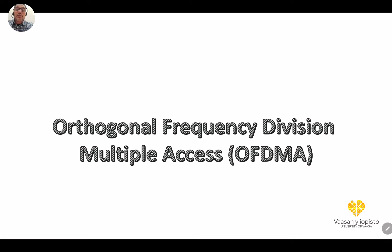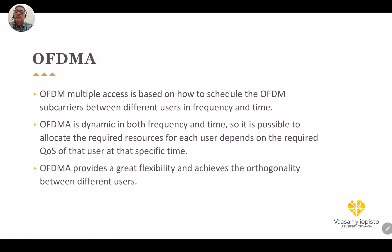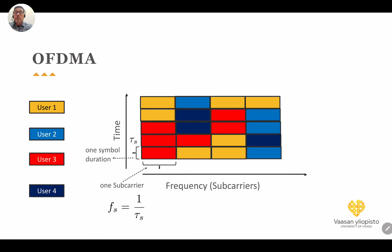Next: Orthogonal Frequency Division Multiple Access (OFDMA). In frequency division multiple access, we allocate subbands for different users. For example, in the first time slot we allocate one subcarrier for user 3, two subcarriers for user 1, and one subcarrier for user 2, and so on.